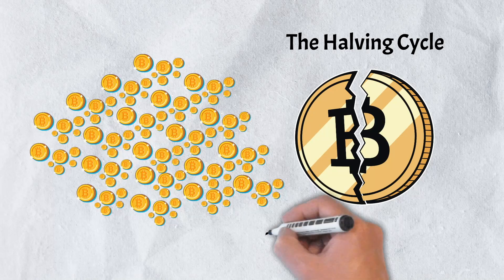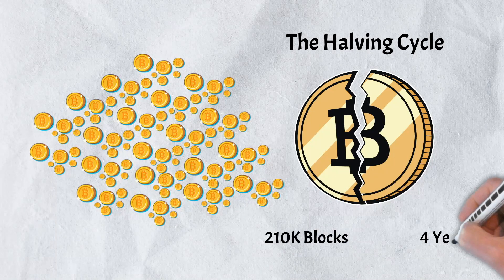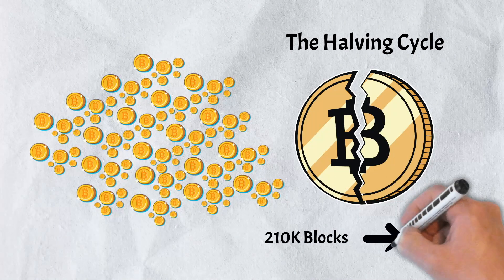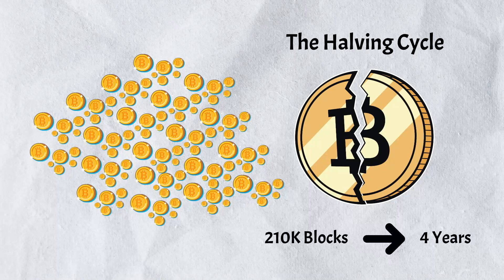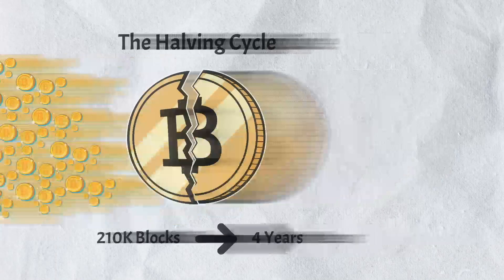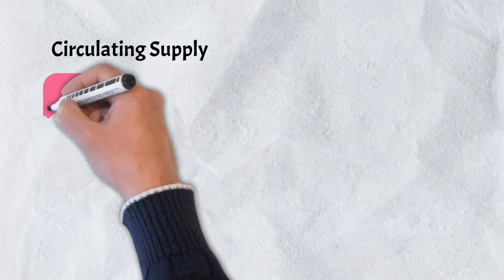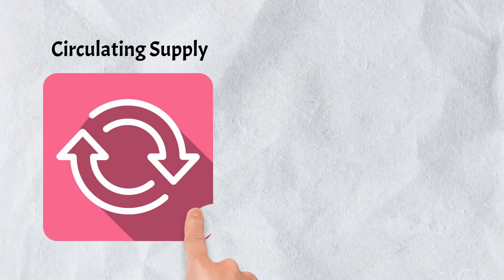The halving cycle halves the reward, or number of Bitcoins that miners receive every 210,000 blocks, or roughly every four years. The halving cycle works as a deflationary tool, giving Bitcoin good long-term value. Because of the halving cycle, Bitcoin's circulating supply is mostly stable and predictable.